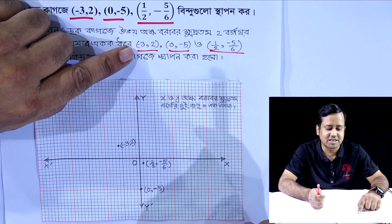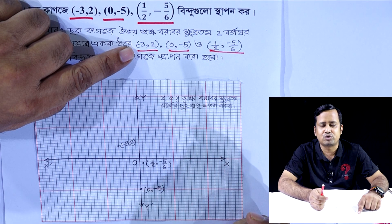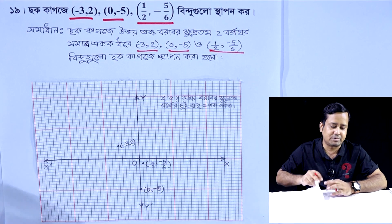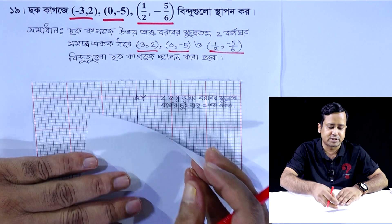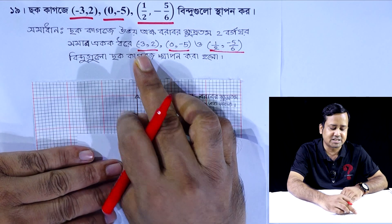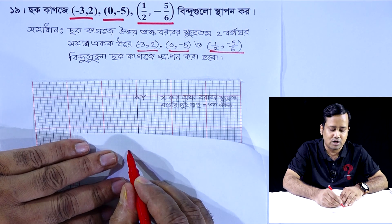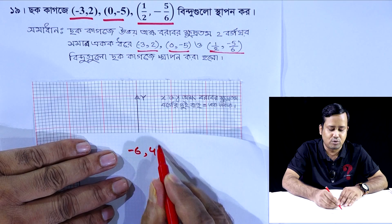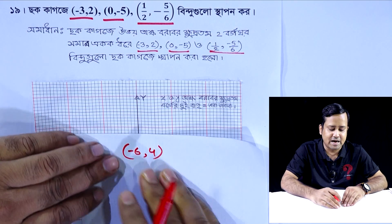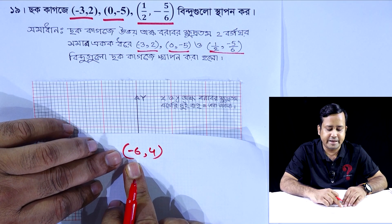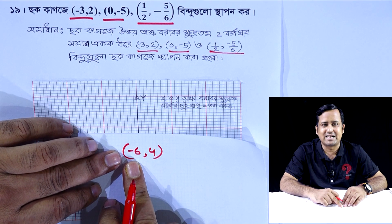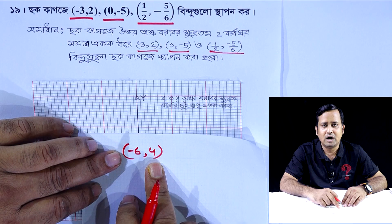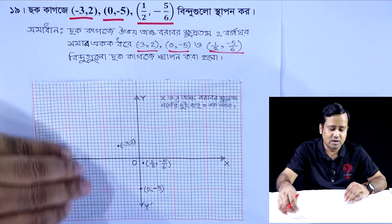Minus 3 is equal to 2. We have two; three is equal to minus 6, and two is equal to 4. Then we have minus minus minus 1, and y is equal to minus minus 1.